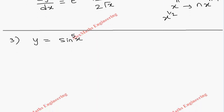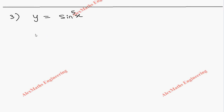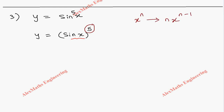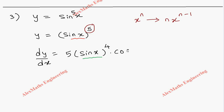Next question: y = sin⁵(x), which we can rewrite as (sin x)^5. Here the outer function is the power 5 and the inner function is sin x. First we apply the x^n formula — its differentiation is n·x^(n-1) — so dy/dx becomes 5·(sin x)^4. Then coming to the inner function sin x, its differentiation is cos x. So totally we have 5·sin⁴(x)·cos x.